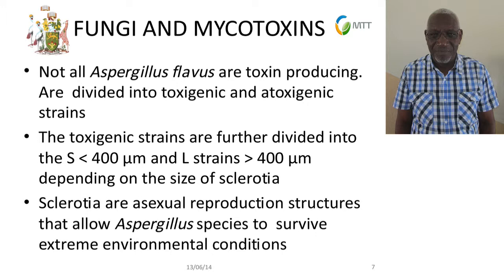Not all Aspergillus flavus produce toxin. Some are non-toxigenic and are referred to as atoxigenic strains — these were mentioned in the biocontrol presentation earlier. The toxigenic strains also differ in factors important for toxin production. One division is based on the production of asexual reproduction structures called sclerotia. Those that produce smaller sclerotia, less than 400 microns, are the S strains, while those producing larger sclerotia, more than 400 microns, are the L strains.